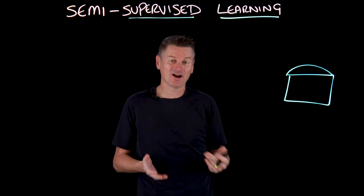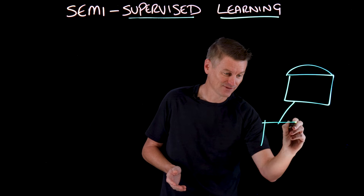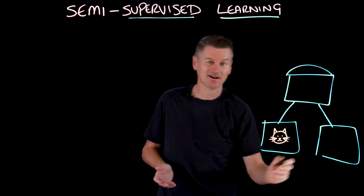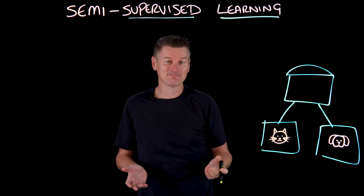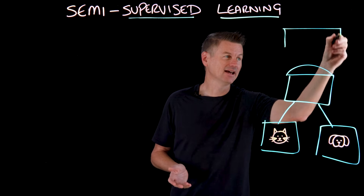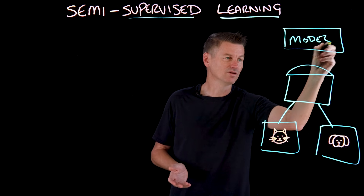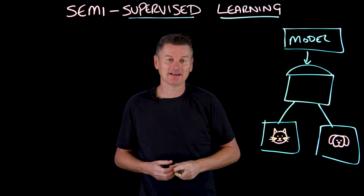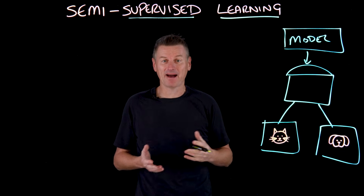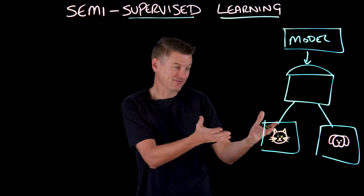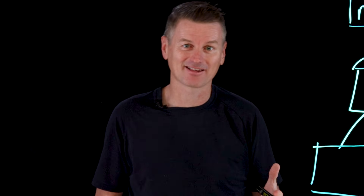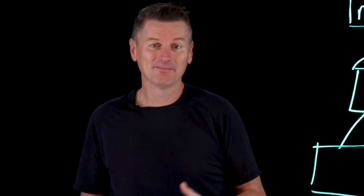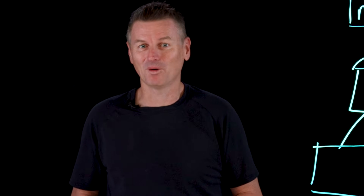For instance, we might have 100 images and half of them are labeled as cat, and the other half are labeled as dog. The model learns from these labeled examples by identifying patterns and features that differentiate these animals — things like ear shape, which are generally more pointy for cats, or body structure, which is generally more bulky for dogs.